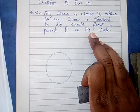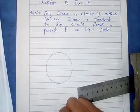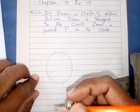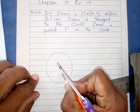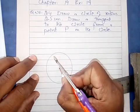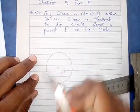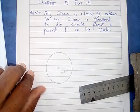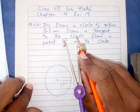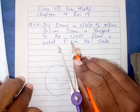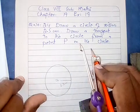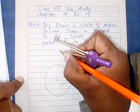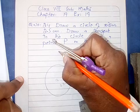یہ circle بنا لیا آپ نے۔ آپ کے پاس 2.5 cm کا circle بنا ہے۔ اس کے center کو O consider کیا جاتا ہے — O for its center۔ اب question کہہ رہا ہے: draw a tangent to the circle from a point P on the circle۔ Circle پہ کہیں پر بھی آپ ایک point consider کریں۔